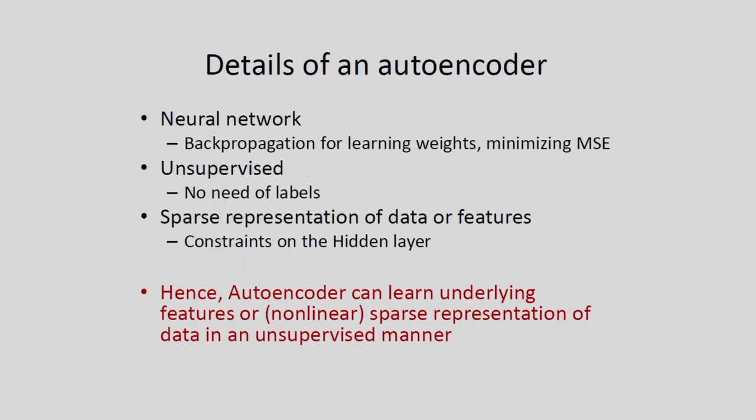The autoencoder is a neural network where learning is done mainly by backpropagation, minimizing the mean square error (MSE). It is an unsupervised technique because no class labels are available. We have a bottleneck layer that imposes constraints on the hidden layer, resulting in sparse representation of data or features. Hence the autoencoder can learn underlying features or the sparse representation of data in an unsupervised manner.